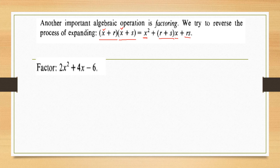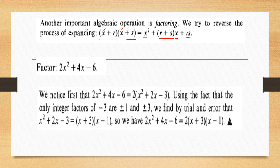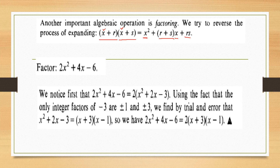Let us factorize 2x² + 4x − 6. We note that this can be written by taking 2 as common from the whole expression. Inside we have x² + 2x − 3. Here the constant term is minus 3, so let us apply the hit-and-trial rule. The factors of minus 3 are plus or minus 1 and plus or minus 3.